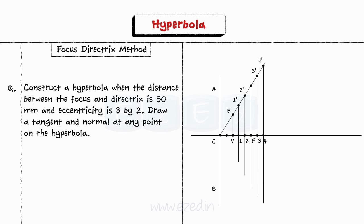Step 7. Now taking distance 1-1 dash, draw an arc on either side of the line from point F. Similarly, take distance 2-2 dash, draw an arc on either side of the line from point F. Proceed further for the remaining points.